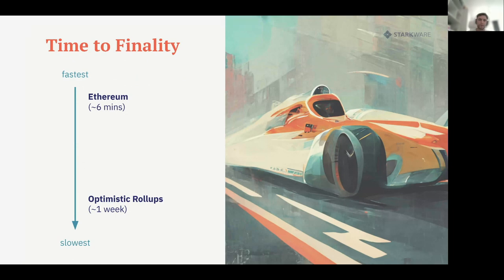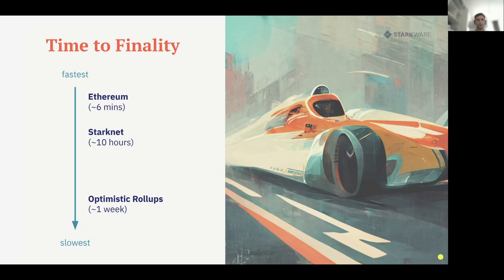You may have heard about optimistic rollups, which are competition for ZK rollups. The problem with optimistic rollups is they have a one-week finality period on Ethereum. StarkNet and ZK rollups have much lower time to finality — around 10 hours currently. Theoretically it could be lower, but you need to ensure there's no reorganization of blocks on Ethereum. Even so, around 10 hours is a sweet spot — far better than optimistic rollups' one-week finality.